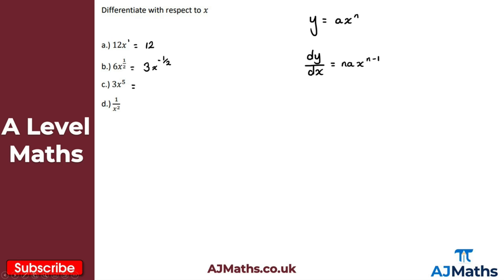For part c, 3x to the five: we bring the five down and multiply by the coefficient, so five times three gives 15. We then reduce the power by one, giving x to the four. So the answer is 15x to the four.